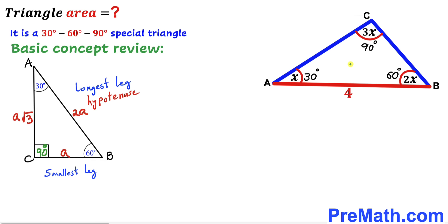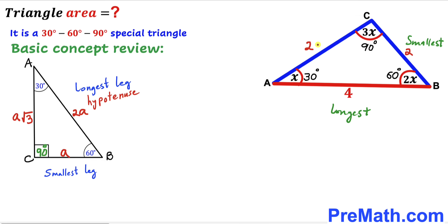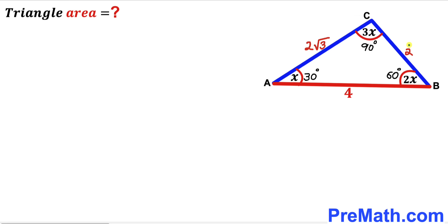Reverting our attention back to the original triangle: side AB is our longest leg and side BC is our smallest leg. We know the longest leg is 4 units, so the smallest leg is half of that, which is 2 units. The third leg is therefore 2 times the square root of 3. So our two other legs are 2 units and 2√3 units.